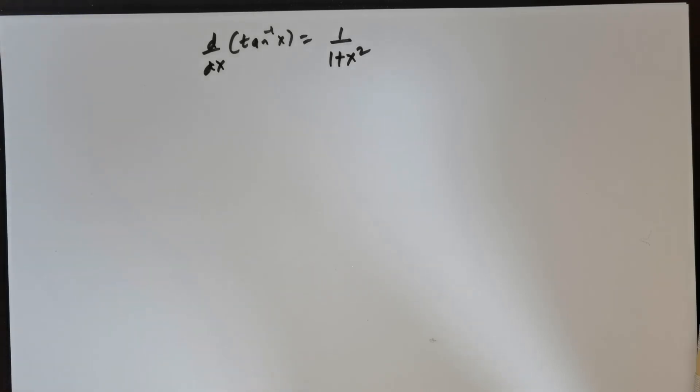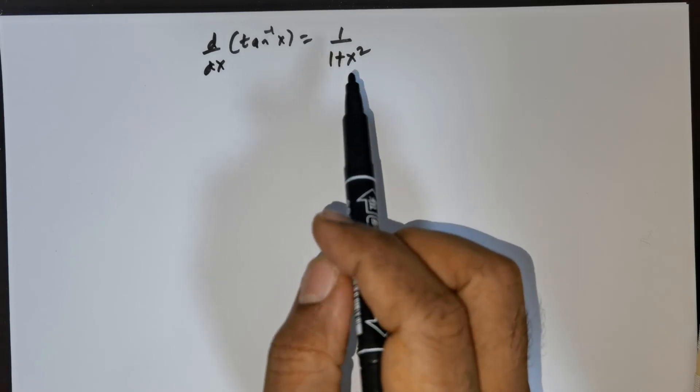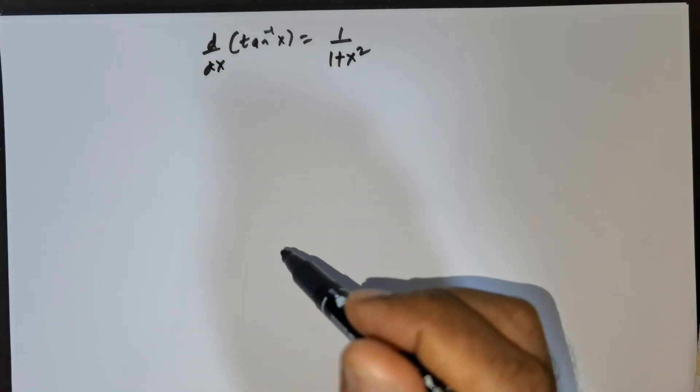Good day everybody. A student asked me how differentiating tan inverse of x gives us 1 over 1 plus x squared, and I am giving you the proof here.